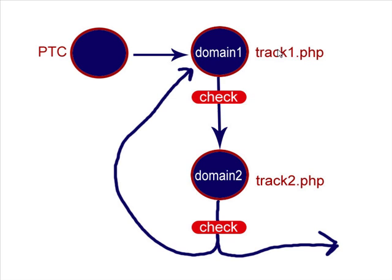When they hit track1.php, it is going to check to see if the paid-to-click referrer is still there or if it is missing. What I mean is ezine articles will track referrers for traffic coming into their site. If somebody clicks a link on any website and goes to the next website, often the browser will show the URL that you came from. We don't want ezine articles to see the URL we came from, so this actually makes the browser blank out the referrer.